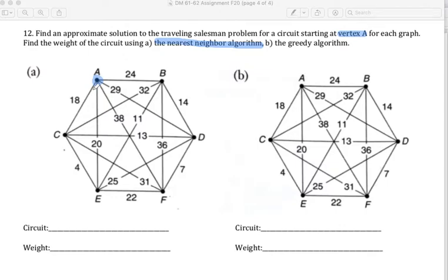Vertex A, we look around, we can travel 18 to C, 20 to E, 38 to F, 29 to D, or 24 to B. The shortest segment is that 18. We will travel the shortest from where we are currently located. I'd be at point C.